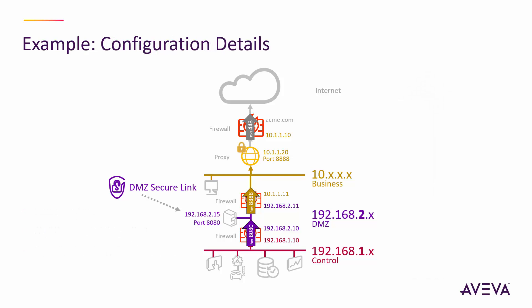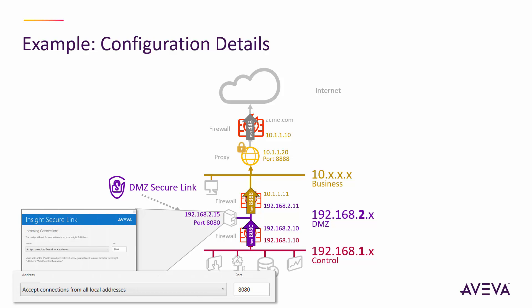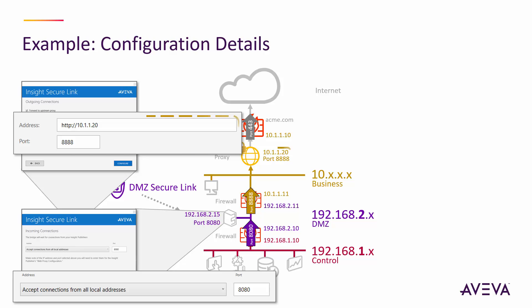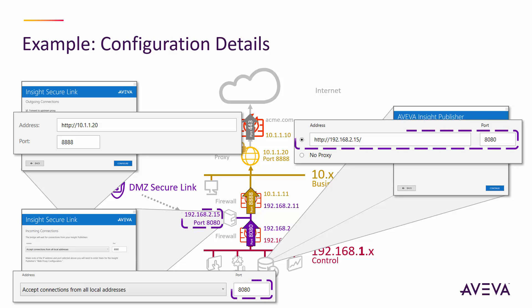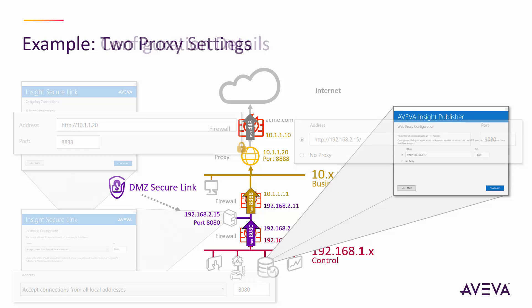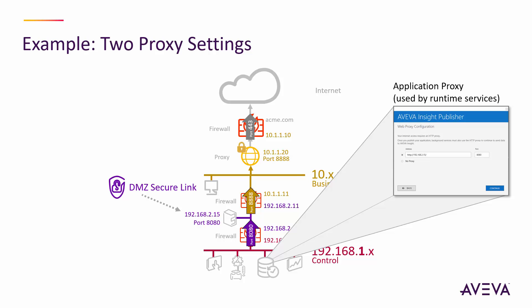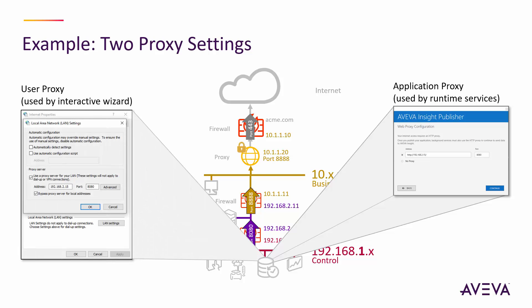Let's look at how you would configure this. Once you install DMZ SecureLink, you can configure which IP addresses it listens on and the port it uses. If there's an upstream corporate proxy, you can configure that as the forward proxy it will use to get to the internet. Then on the publishing side, in the publisher, you can also specify a proxy, referencing the DMZ SecureLink. There are really two proxy settings that apply on the publishing side: one used by the runtime, configured in the publisher itself — note that older versions of Wonderware Historian don't have this proxy setting in the setup wizard, so you may need to specify it in a configuration file. The publisher's interactive configuration also needs a proxy to reach the internet, and that uses your user proxy configured in Windows.